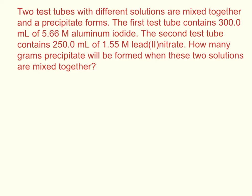It involves taking two test tubes, each with a unique solution. The first one contains aluminum iodide and the second contains lead(II) nitrate. For each of the solutions they've given you a volume and a concentration.